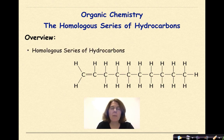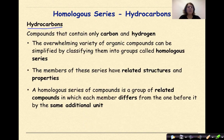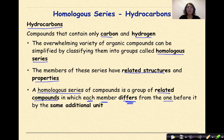Specifically looking at the homologous series of hydrocarbons, which involves alkanes, alkenes, and alkynes. A hydrocarbon is a compound that contains only carbon and hydrogen. The overwhelming variety of organic compounds can be simplified by classifying them into groups called the homologous series. The members of these series have related structures and properties — in other words, they're similar to one another. A homologous series is a group of related compounds in which each member differs from the one before it by the same additional unit — in this case, the adding of additional carbons.